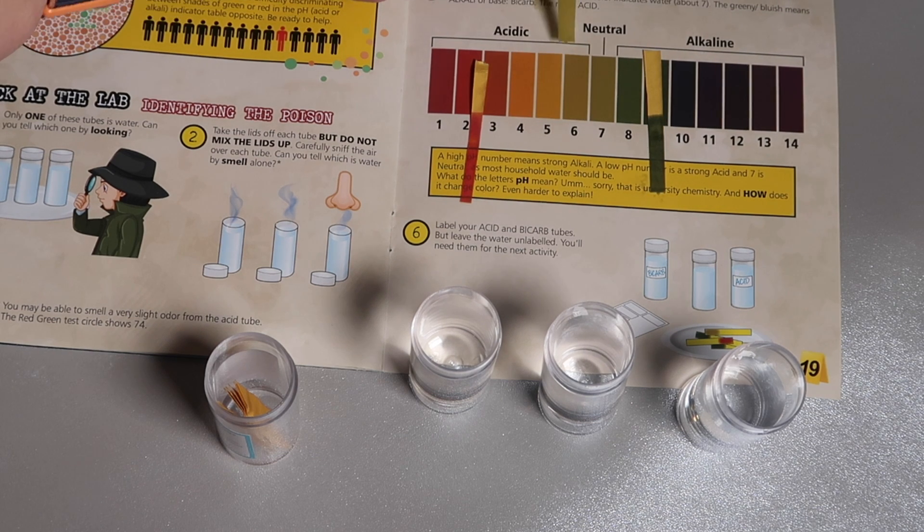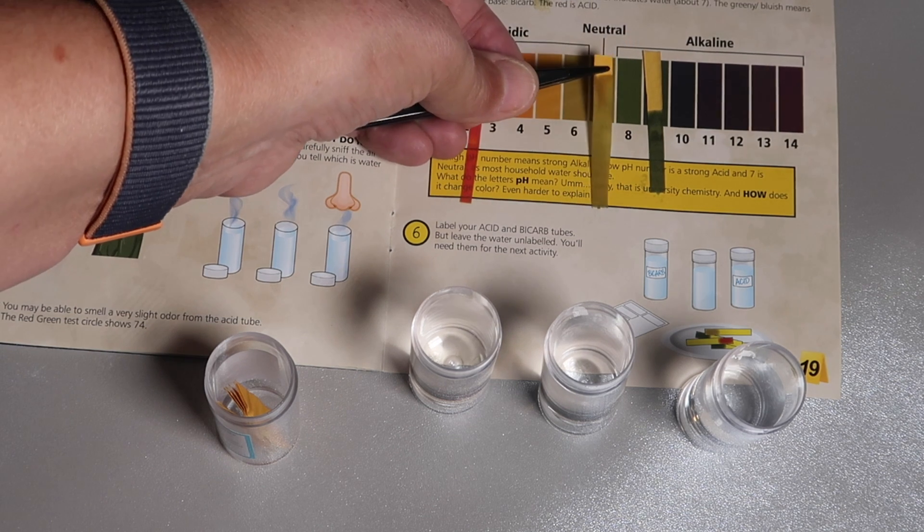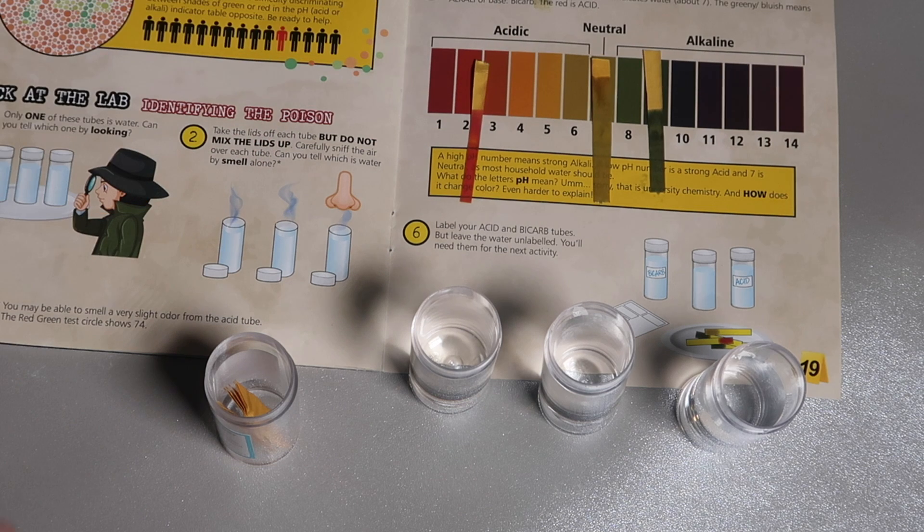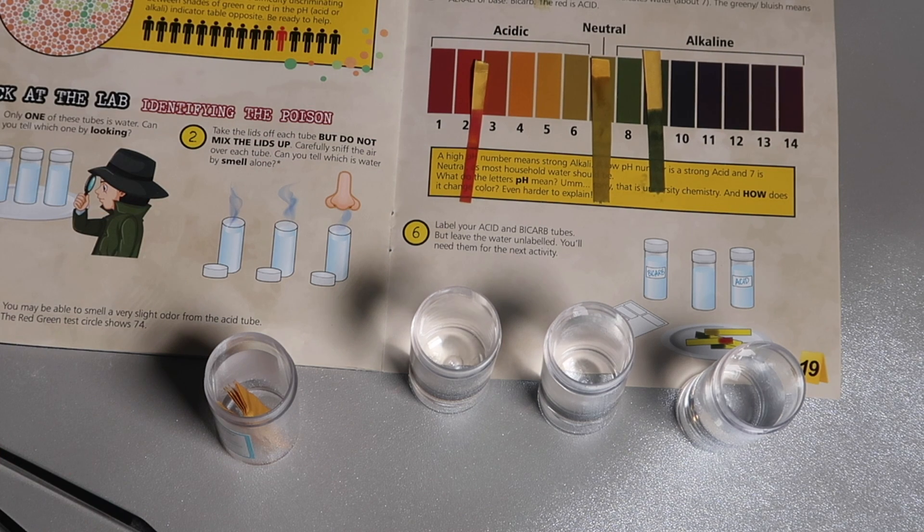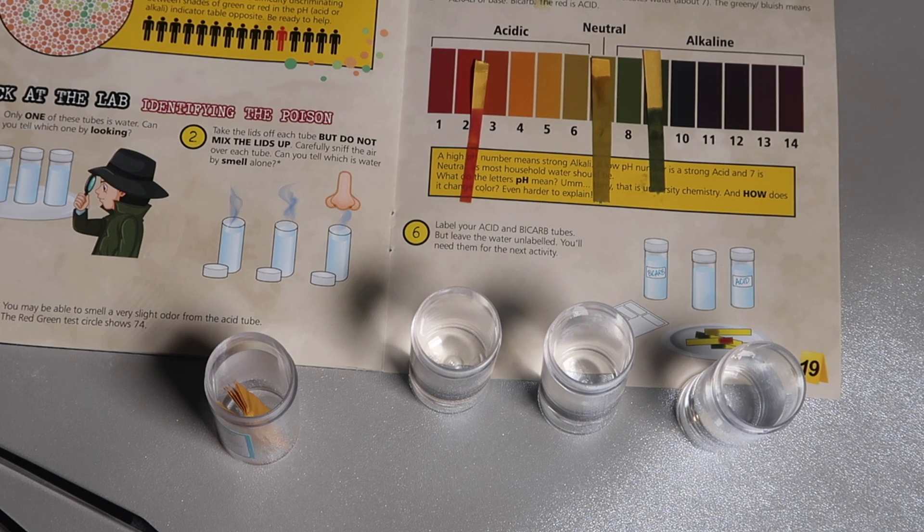Therefore, we can assume that this first sample we took, neutral is here. So we can assume that this is plain water. So we know that that is not the poison. And one of the others, or both of the others, would definitely be suspicious.